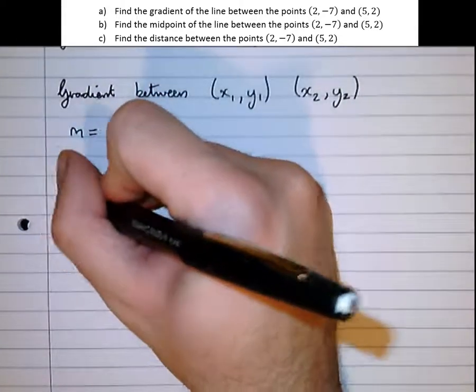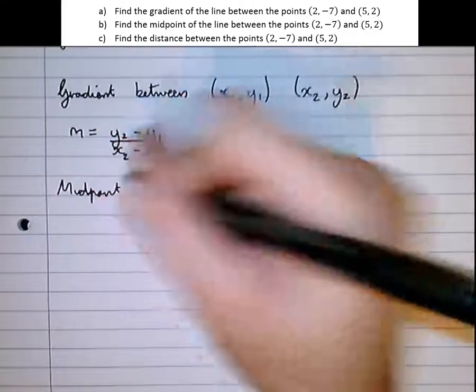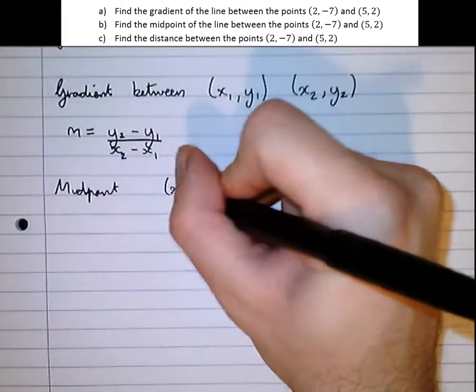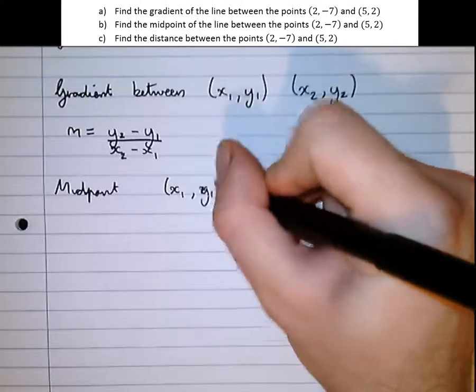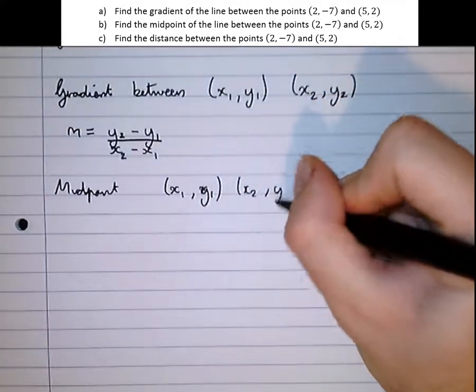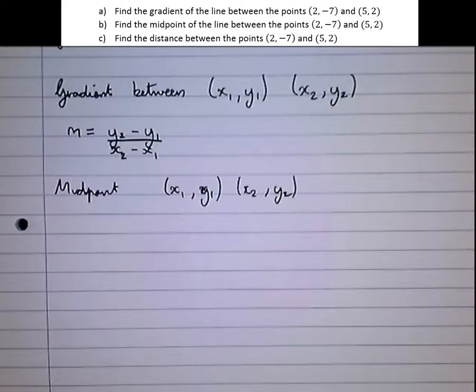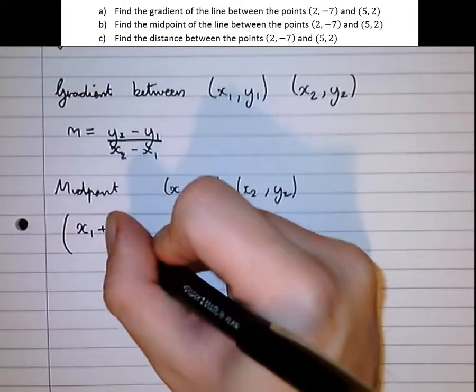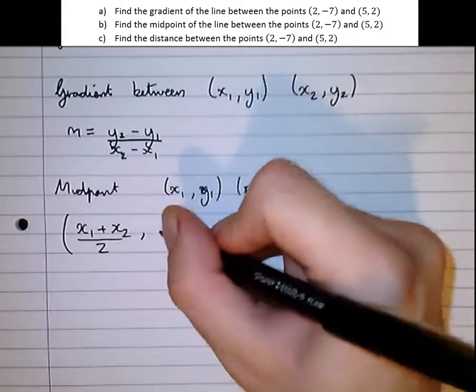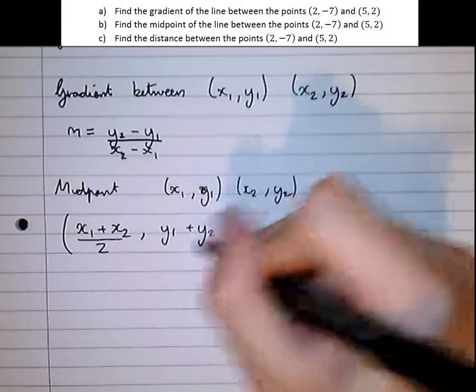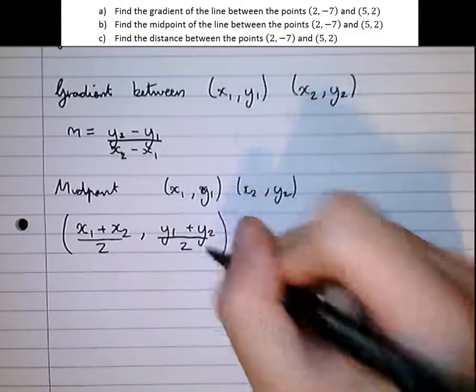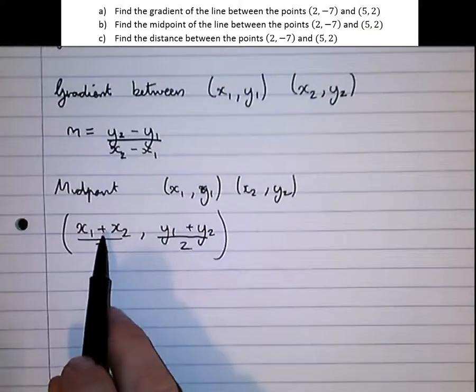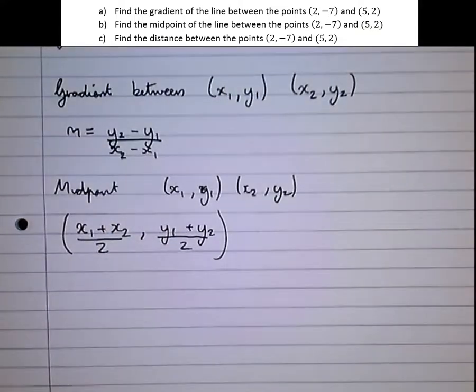The midpoint of these two points, x₁, y₁, x₂, y₂, is simply the average, the mean of the x coordinates and the mean of the y coordinates. Now a common mistake here is to subtract at this point, but we don't want to subtract. We must add and divide by two. And finding the mean of the points finds the middle of those two points.